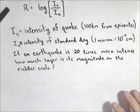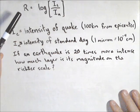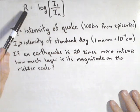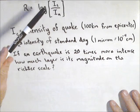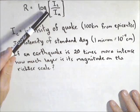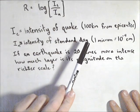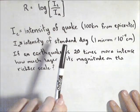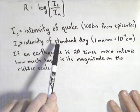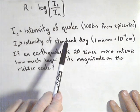In this video, we're going to look at an application of logs involving the Richter scale. The magnitude on the Richter scale is defined to be the log of I_c over I_n, which is the ratio of the intensity of the quake measured 100 kilometers from the epicenter to the intensity of the movement of the earth on a standard day.